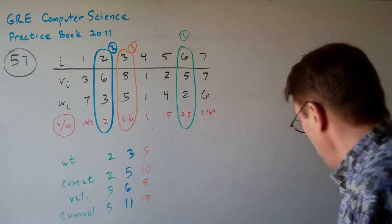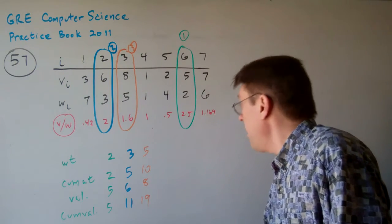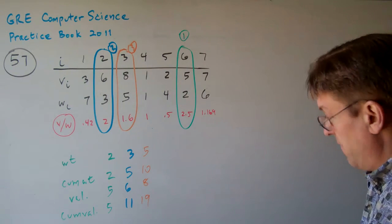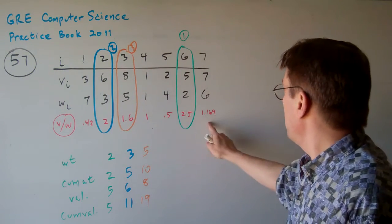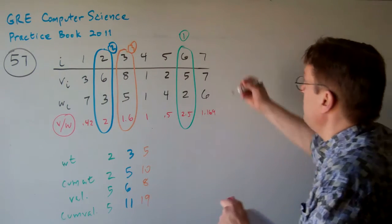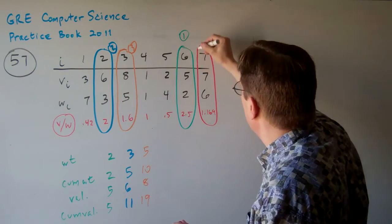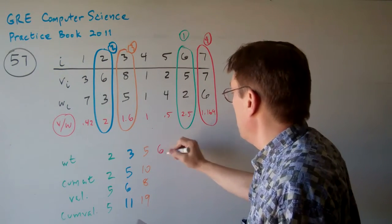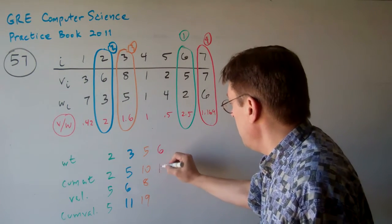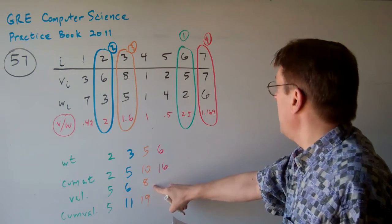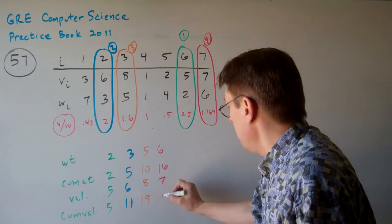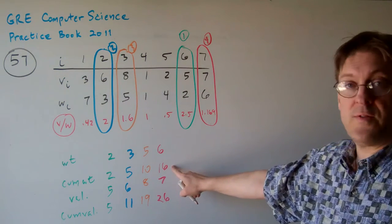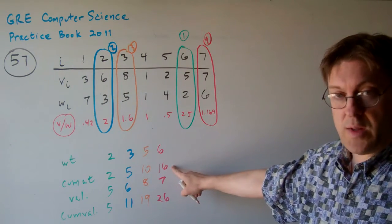Now let's see here. Number 4 is going to be, the fourth one is going to be number 7 here. So let's take number 7. This is going to be the fourth item on the list. The weight is 6. That makes the cumulative weight 16. And the value is 7, which makes our cumulative value 26. So you can see we're getting close. We can only get up to 24 on the weight. That's the maximum weight this thing is going to carry.